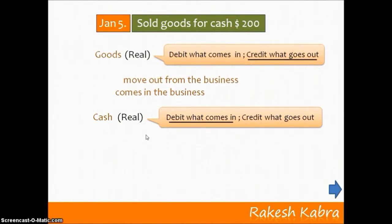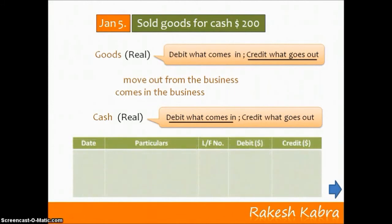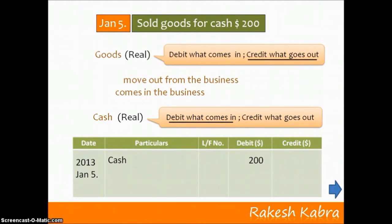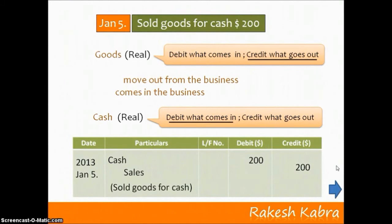Now let's pass the journal entry. We write the date, then record the debit item — Cash account — first. Then we record the credit item. To represent goods we open a Sales account. The amount is shown in the credit column. Narration: sold goods for cash. This is the entry for the last transaction.